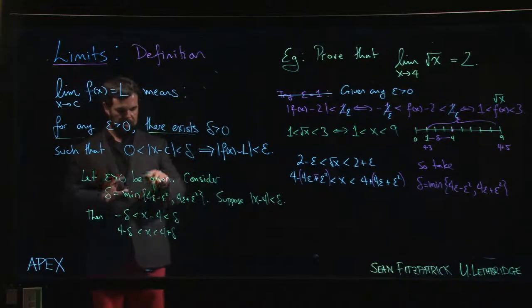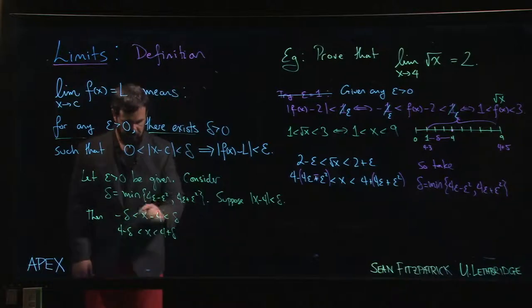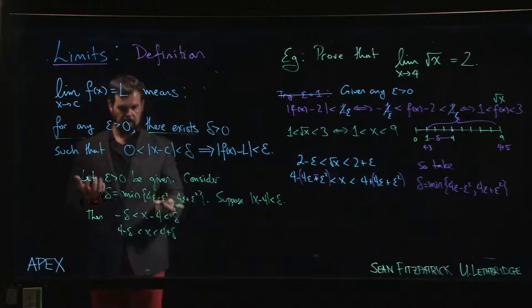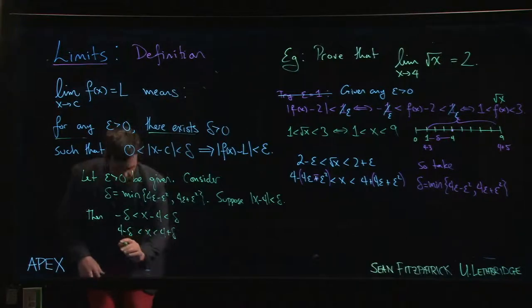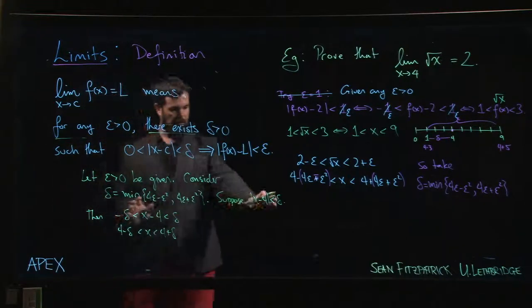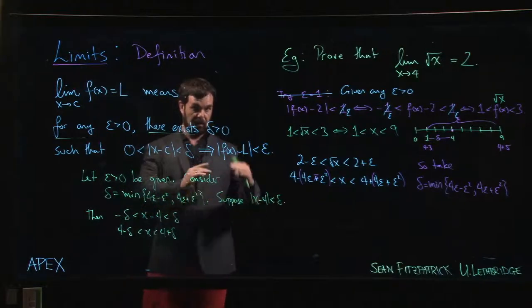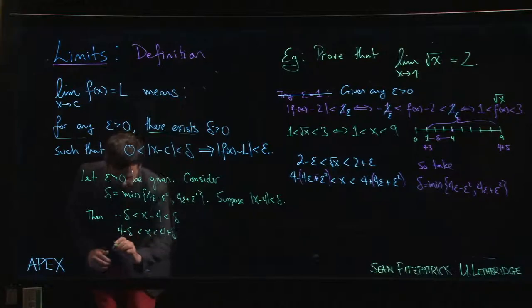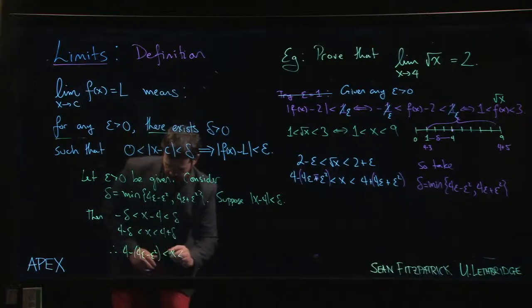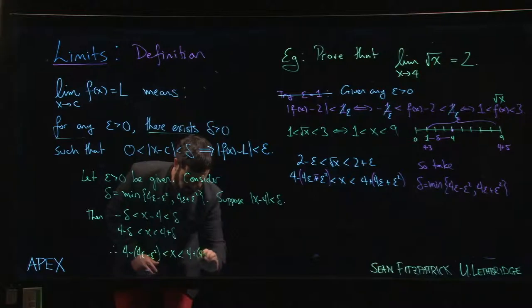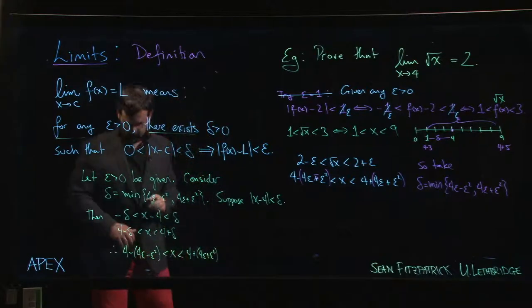And so that means that, and again, you've got to be a little bit careful with the inequalities here, but we can sort of take the, we can replace delta by either one of them on either side because delta is less than or equal to both of them, and here we're subtracting. So if you're a little bit nervous about this, you could do this once with that delta and then again with the other delta and then combine the inequalities. But what we get here is that 4 minus 4 epsilon minus epsilon squared is less than x is less than 4 plus 4 epsilon plus epsilon squared.